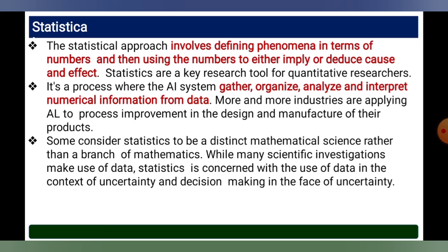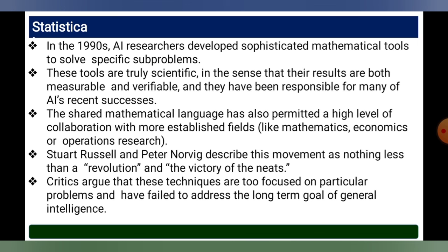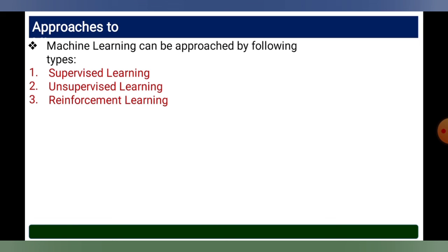The statistical approach takes large amounts of data, splits it into sets, and represents them using charts such as bar charts and pie charts. Statistics defines phenomena in terms of numbers and uses those numbers to imply or deduce causes and effects. Statistical methods are a key research tool for quantitative researchers — gathering, analyzing, and interpreting data in numerical form. In the 1990s, AI researchers developed sophisticated mathematical tools to solve specific sub-problems using this statistical approach. The next topic to be covered is supervised learning, unsupervised learning, and reinforcement learning.